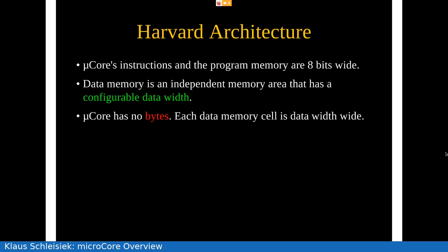MicroCore instructions in the program memory are 8-bit wide. The data memory is an independent memory with a configurable data width, and MicroCore has no bytes — each data memory cell is data-width wide. As long as the data width is larger than 8 bits, you can happily store bytes in a memory data cell. I believe that the fact that most processors deal with bytes is a very unfortunate fact because it makes hardware more complex than it needs to be, and it doesn't really buy you any advantage except data compression — which was an issue in the last century but no longer in the 21st century.